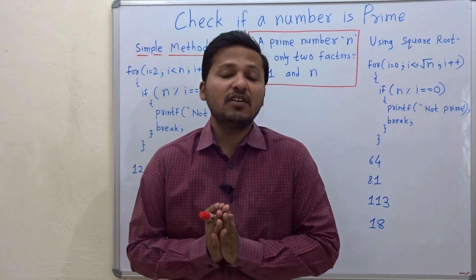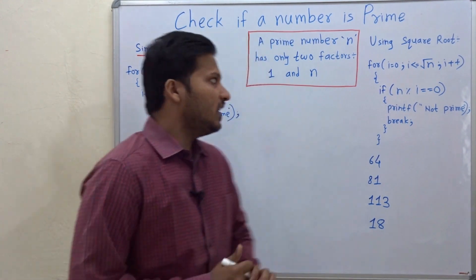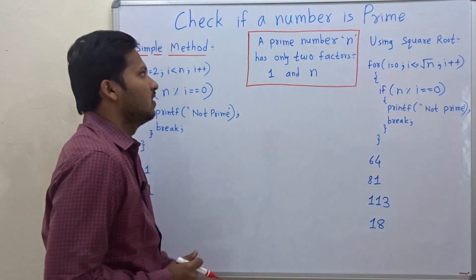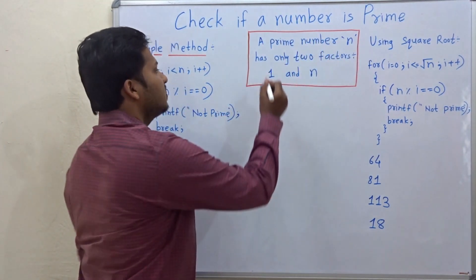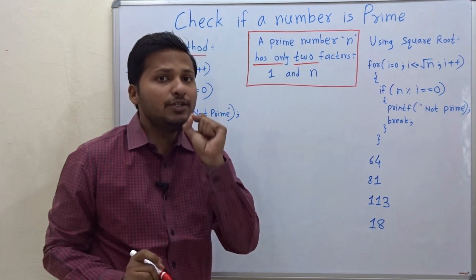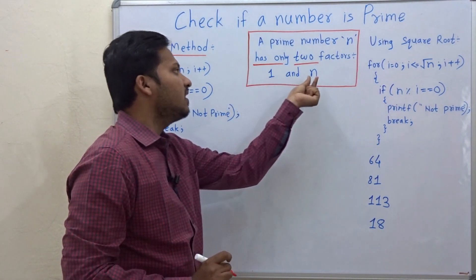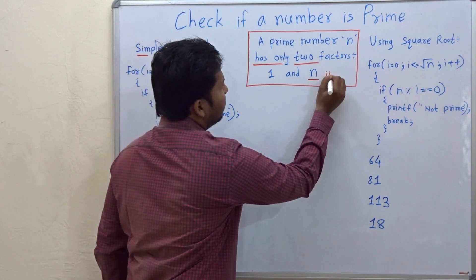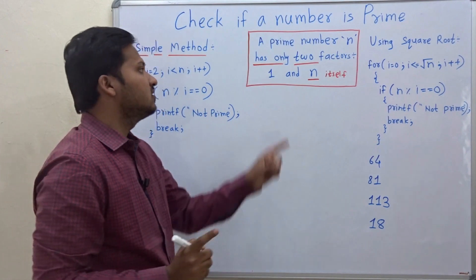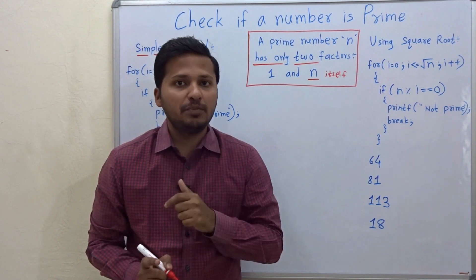Hello friends, today we are going to see how to check if a number is prime or not. A prime number n has only two factors — 1 and n itself. So a number which has only two factors, that is 1 and itself, is called a prime number.